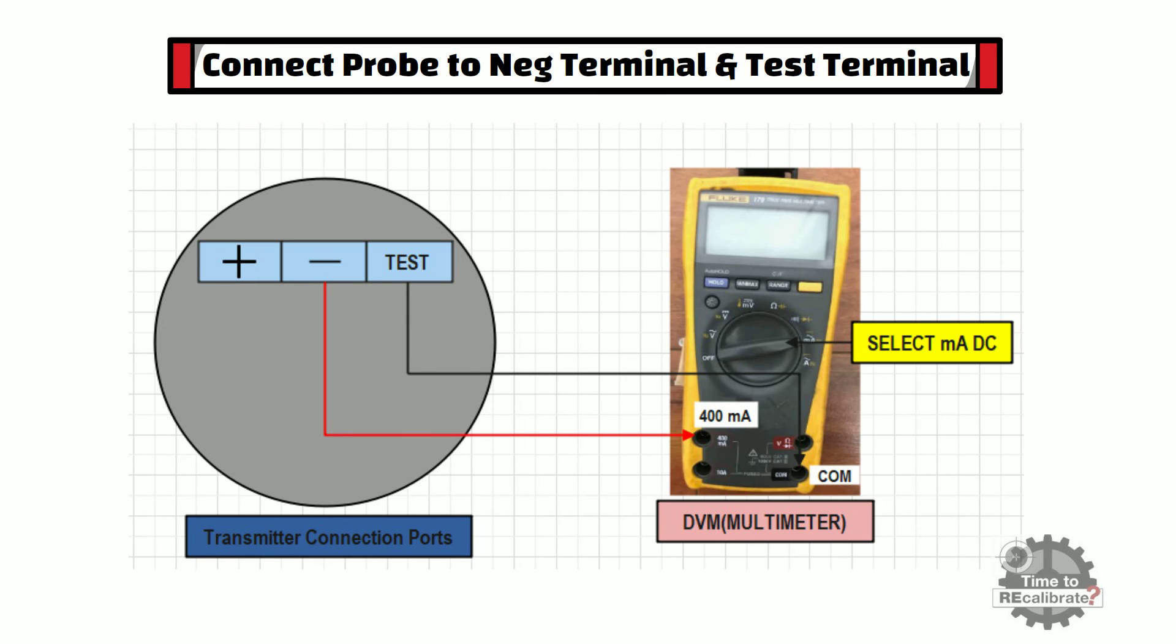After connecting probe to negative and test terminals, put the multimeter to current measuring mode and select mA DC function of multimeter. Once you select mA DC from multimeter, multimeter will show mA output of transmitter.